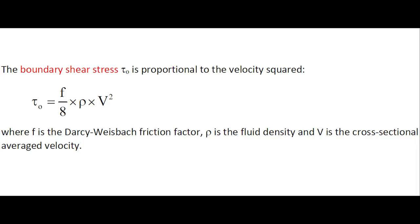The boundary shear stress, tau-zero, is proportional to the square of the velocity, in which f is the Darcy-Weisbach friction factor, and rho is the fluid density.